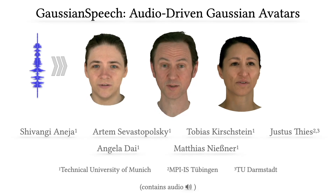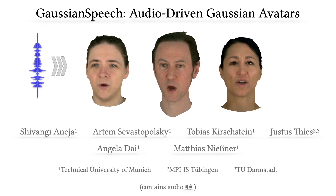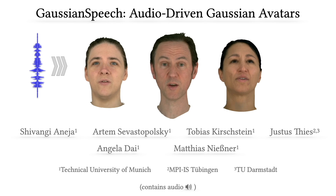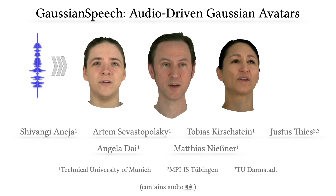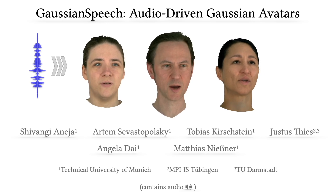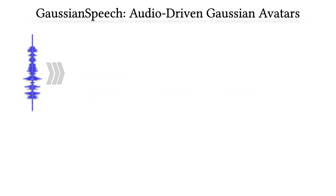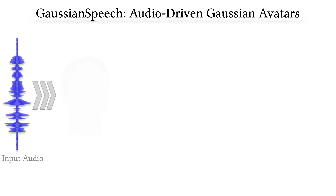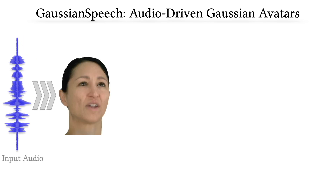We present Gaussian Speech, enabling audio-guided motion synthesis of photorealistic 3D human head avatars. Gaussian Speech can synthesize high-quality, personalized 3D head avatars. From an input audio signal, we can easily animate multi-view-consistent 3D head avatars.